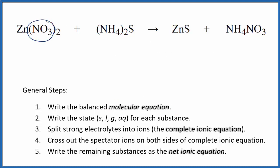I can see that I have two nitrate here and only one nitrate there, so I'm going to put a 2 in front of the ammonium nitrate. That balances the nitrates. I have two ammonium ions, and I have two of them here, so that's good. I have a sulfur and a sulfur and a zinc and a zinc. So everything's balanced. The molecular equation is balanced.